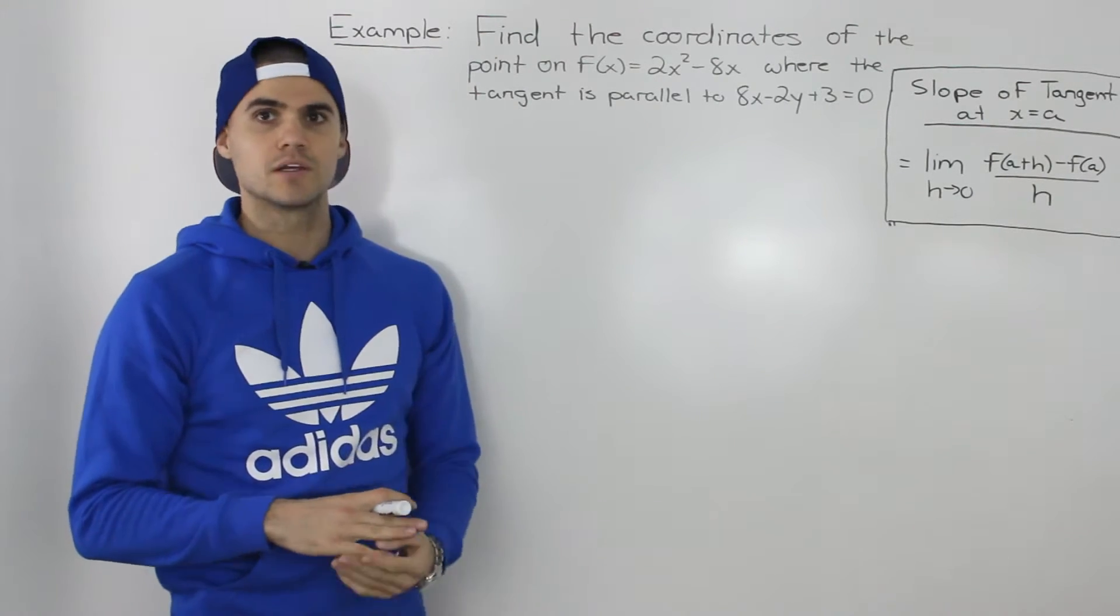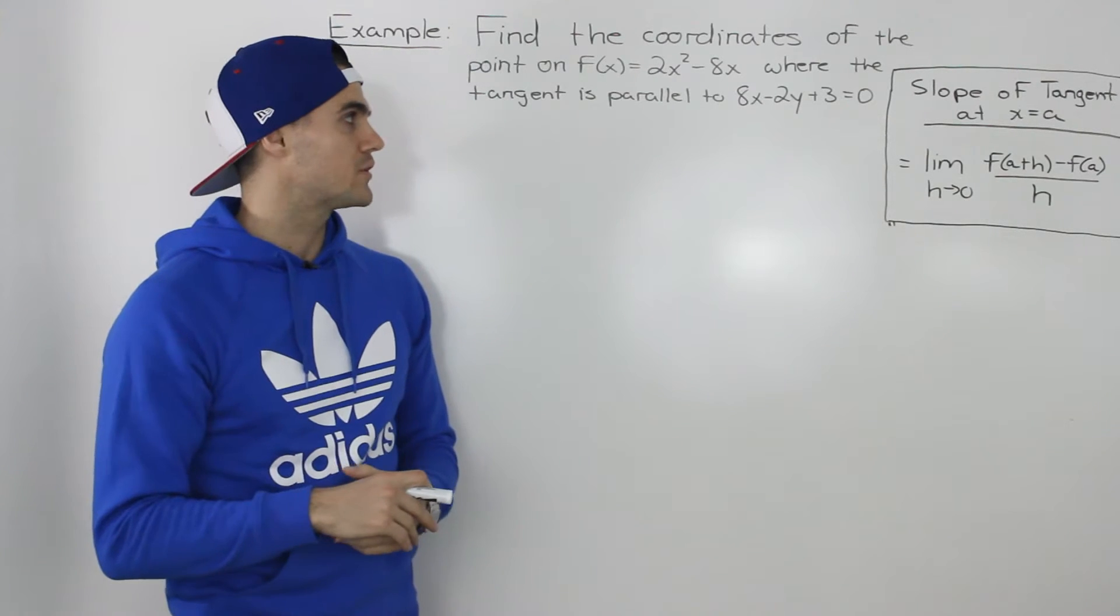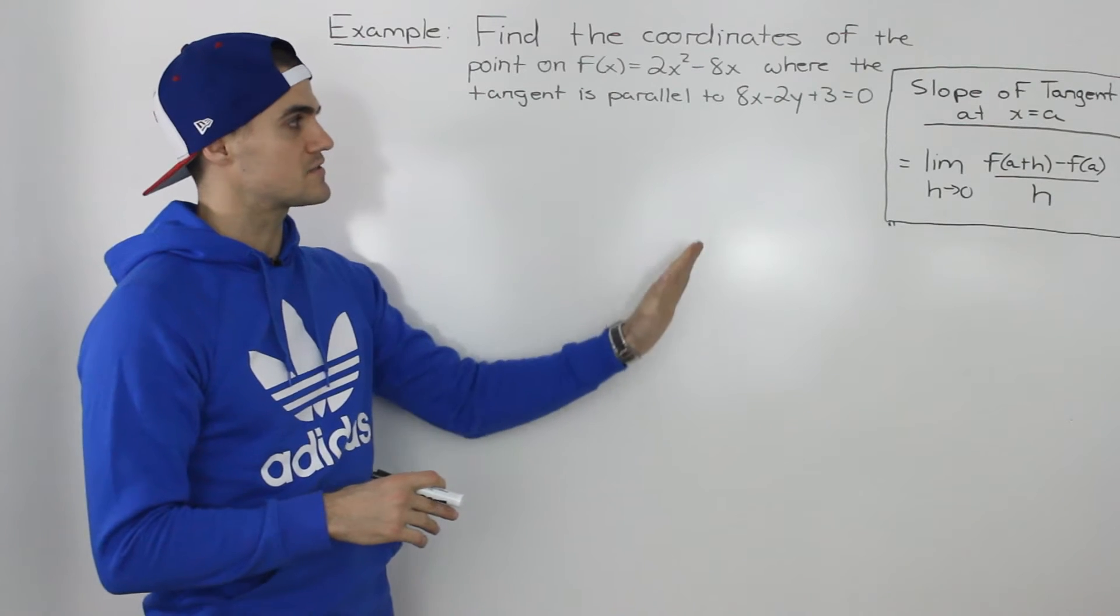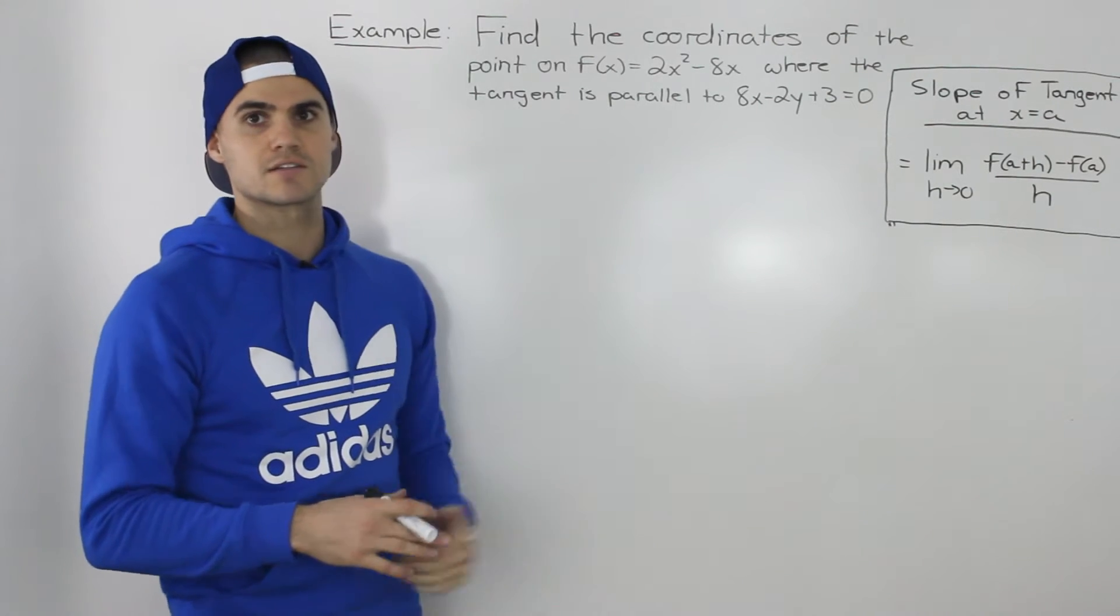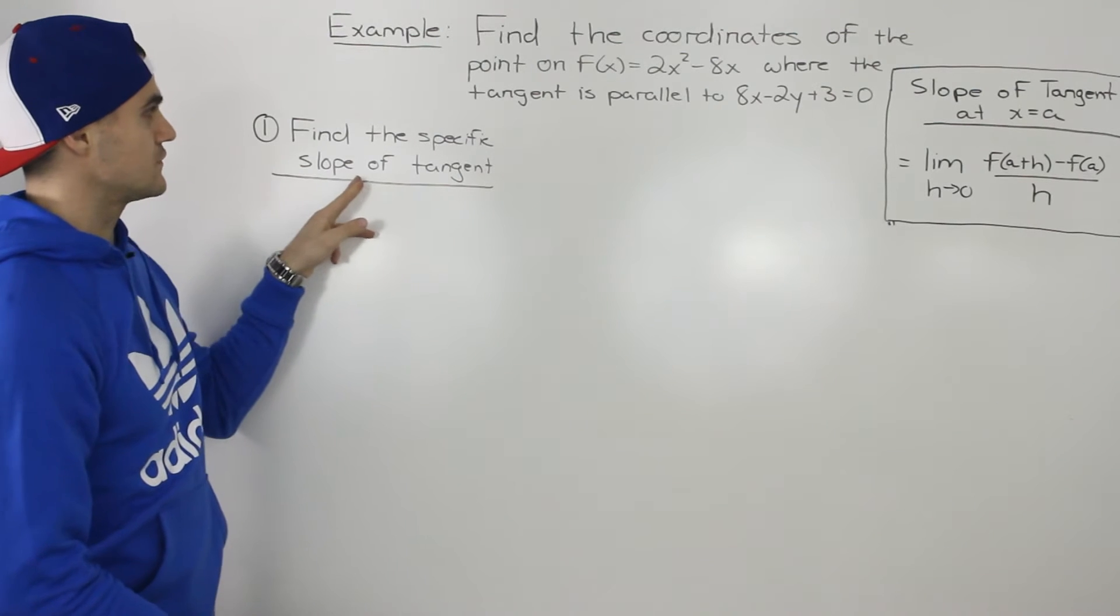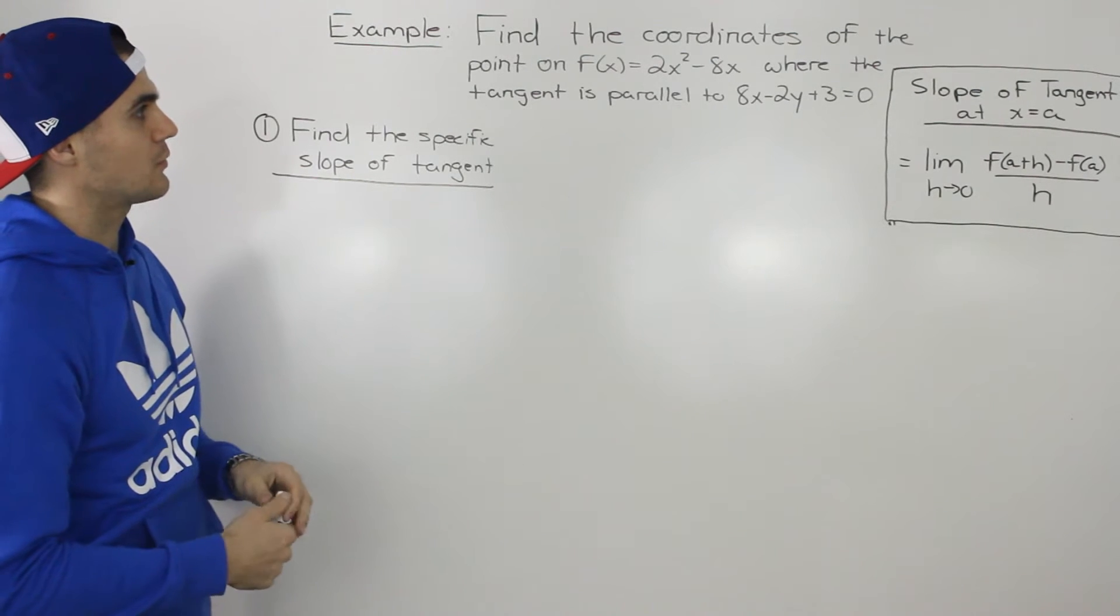Now this question is going to be a little tougher than the ones we've done previously, but overall it's not too bad. I'm going to do it in a distinct series of steps, so do your best to follow along. The first thing we've got to do is find the specific slope of the tangent that we're looking for.